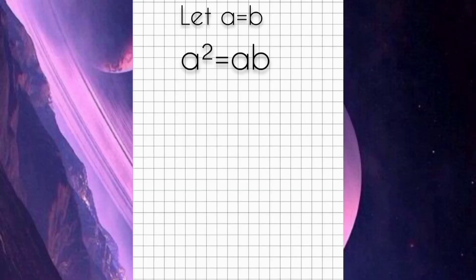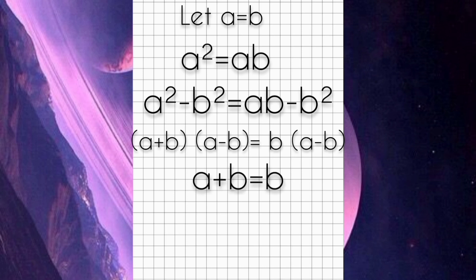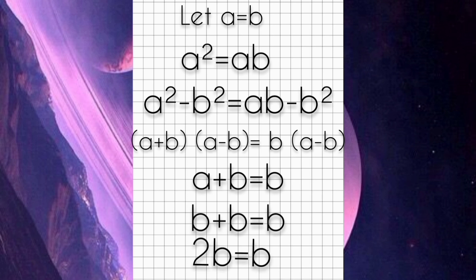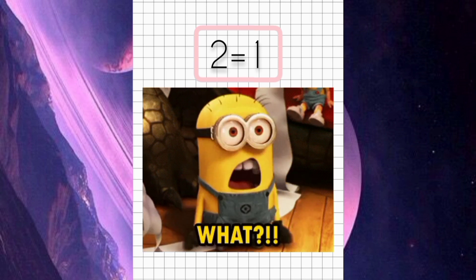There is another reason. Division by zero while solving equations takes us to contradictions. For example, let A equal B. Multiply both sides by A, then subtract B squared from both sides. By factoring, we get a certain expression. Now, dividing by A minus B — which is zero — gives us A plus B equals B. But since A equals B, that's the same as B plus B equals B, meaning 2B equals 1B. Dividing both sides by B, we get 2 equals 1. This is just an example to show how strange the results become if you break this rule.